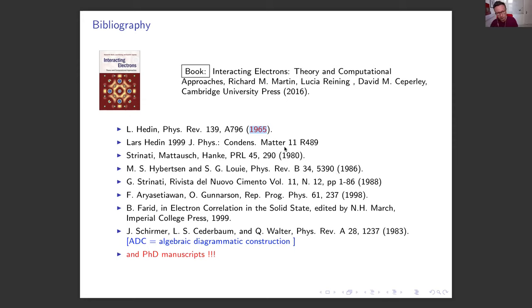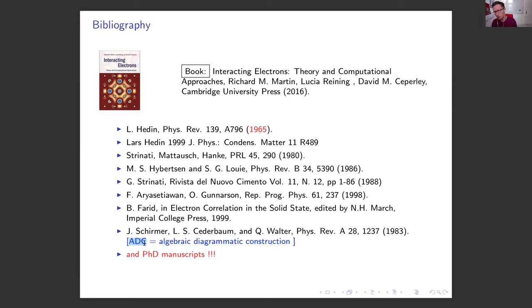If you want to read about the GW formalism, I advise going to these references. PhD manuscripts are very good because when you are a PhD student you bother about all the details. I also highlight a paper by Cederbaum and co-workers pointing to a technique called the algebraic diagrammatic construction, which is also a Green's function perturbation theory but with a different expansion. To some extent, the GW formalism and the concept of self-energy have an equivalent in quantum chemistry.